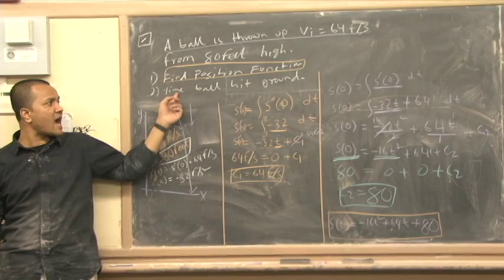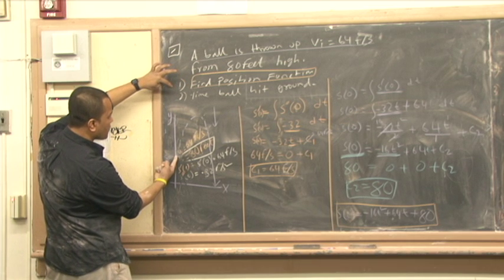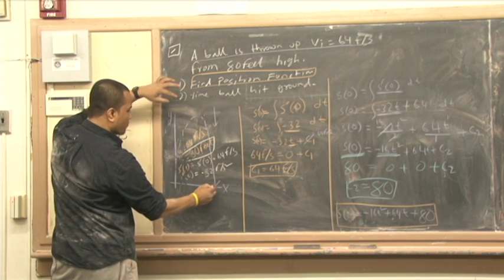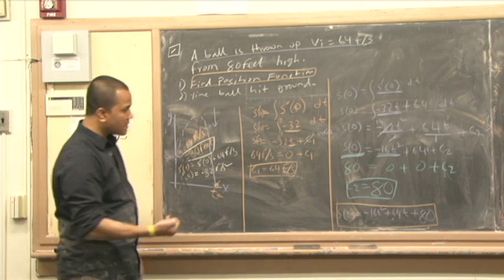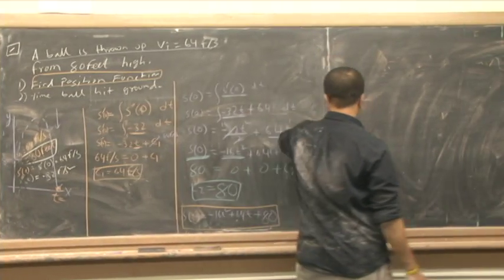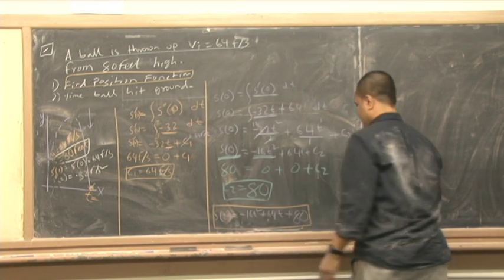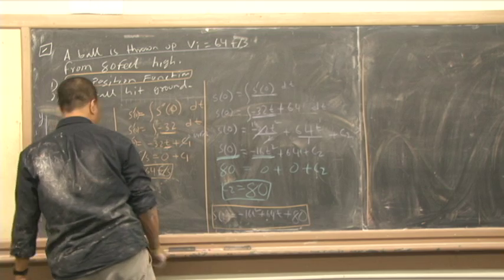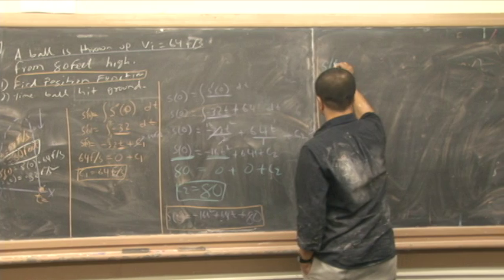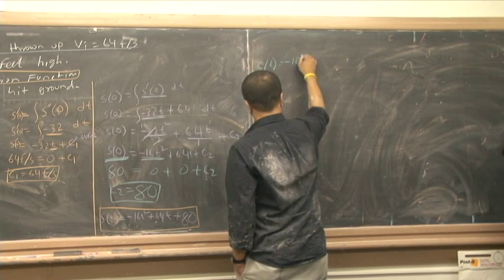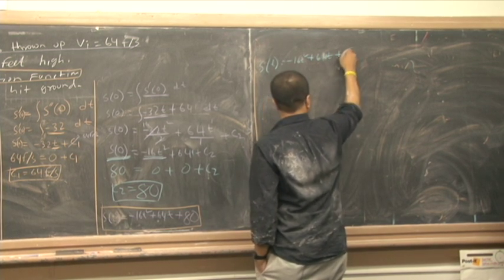Now, we're going to find the time the ball hits the ground. The ball is thrown from here and hits the ground. What time does the ball hit the ground? At this point, what is the t? Let's find that.